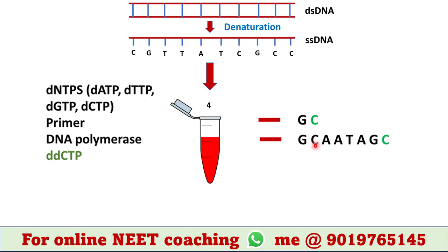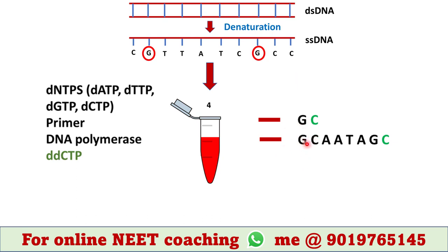In tube 4, ddCTP is used. That means it will be incorporated into the DNA when the complementary base is guanine in the template DNA. As the template DNA contains 2 guanines, ddCTP could be added in 2 places. Hence, we will get 2 types of DNA fragments here.